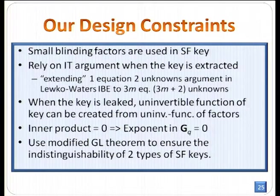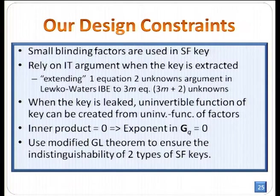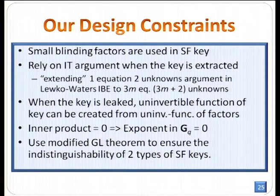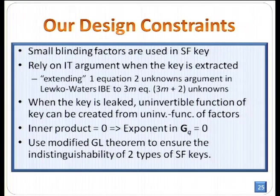We have further design constraints. By the modified GL theorem, we should only use a small binding factor in the semi-functional keys. We rely on an information-theoretic argument where the key is extracted, so we extend our one-equation, two-unknown argument from the LW IBE to a 3M-equation, 3M+2-unknown system in our security proof. When the secret key is leaked, a non-invertible function of the key can be created from a non-invertible function of those binding factors. The inner product equal to zero in the modified GL theorem implies the exponent in the subgroup is equal to zero, and this can be used to simulate the semi-functional keys.